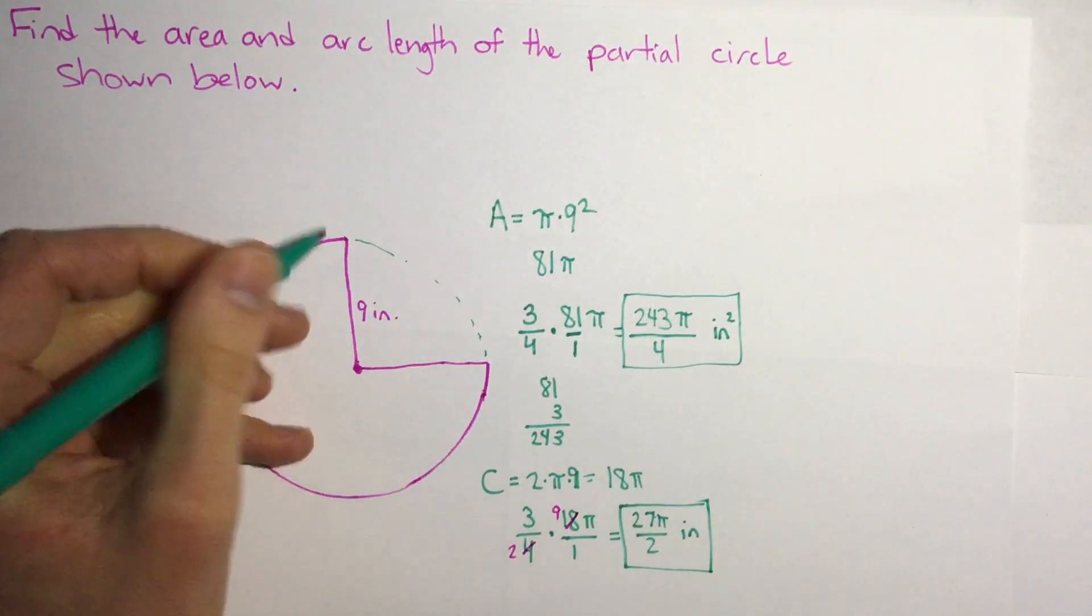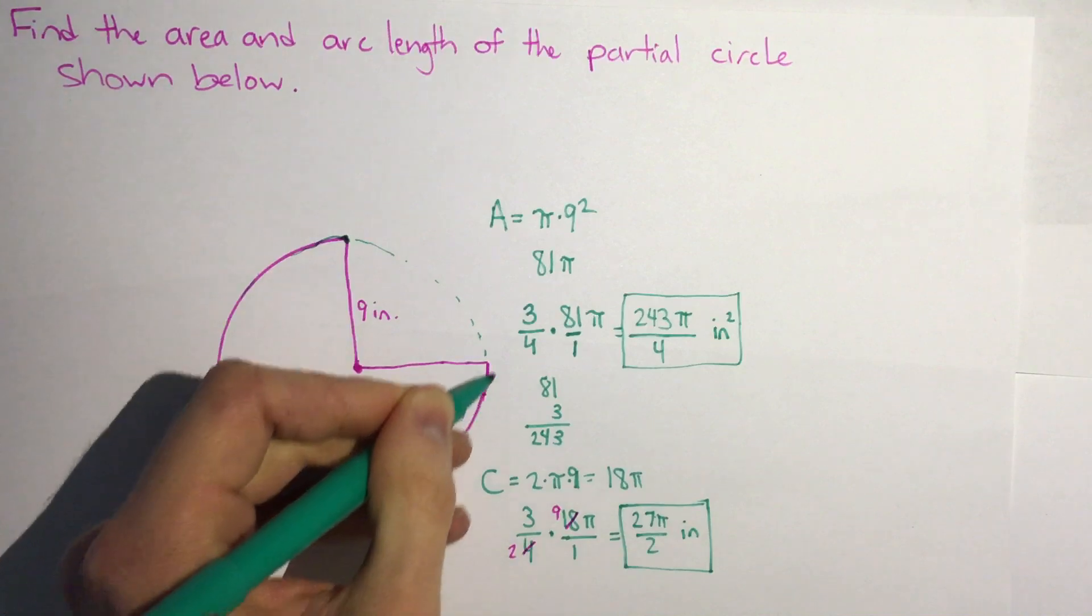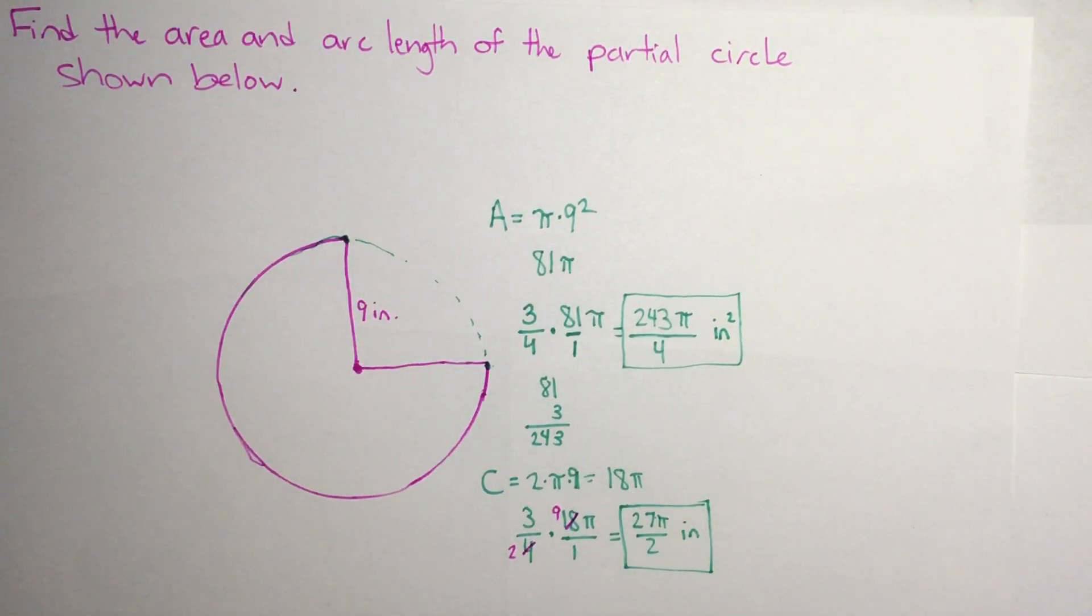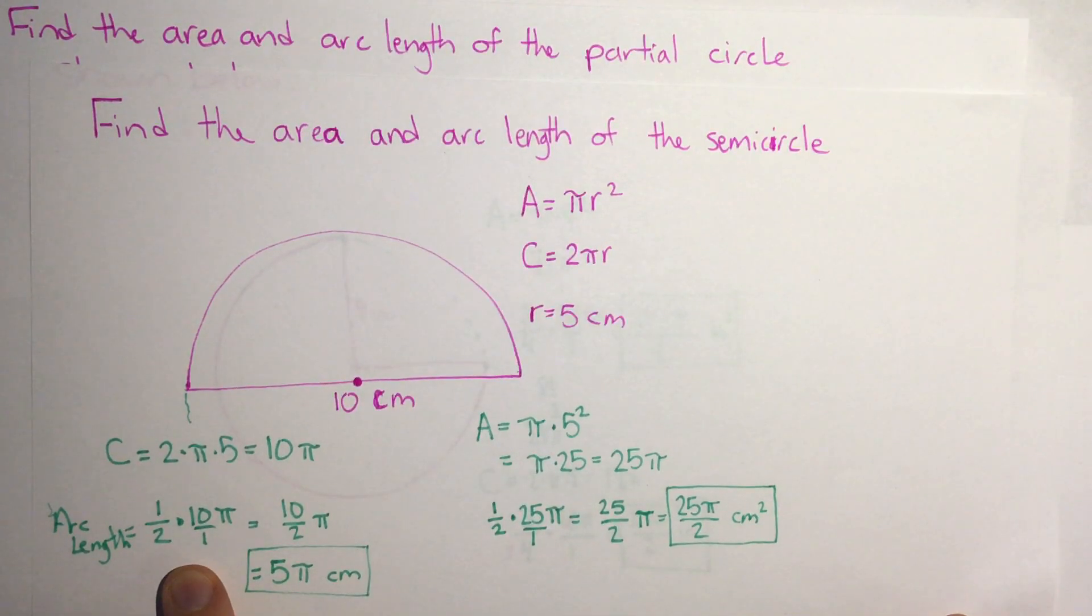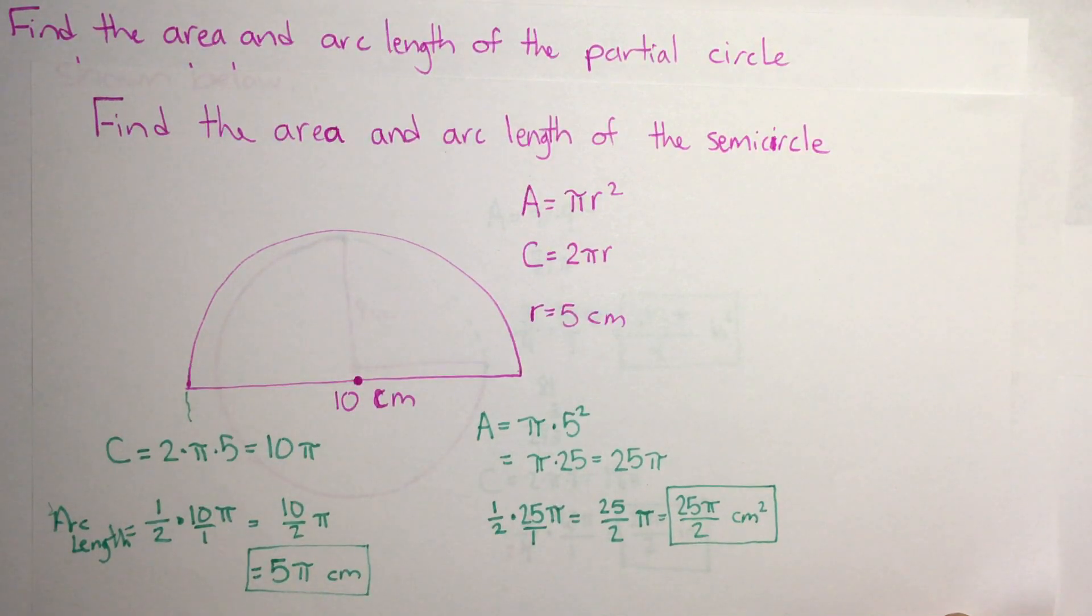And that would be the arc length or the distance around from here going around the circle to here. So again, this is simply finding the area and circumference of a circle, but then multiplying it by whatever fraction of the circle we have. Whether that's 3 quarters of a circle, 1 half of the circle, we'd multiply by 1 half or another fraction. Maybe we have a quarter of our circle or even something like a sixth of a circle. We multiply by that fraction to get the arc length and the area of the partial circle. Now try the practice for all of the circles and then you can move on to the test for this topic. We'll see you next time.